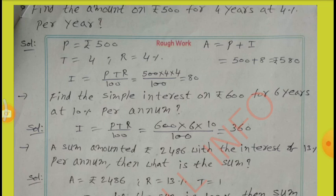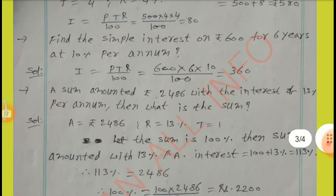Find the simple interest on Rs.600 for 6 years at 10% per annum. I equal to PTR by 100: 600 into 6 into 10 by 100. By simplification, we get I equal to Rs.360.